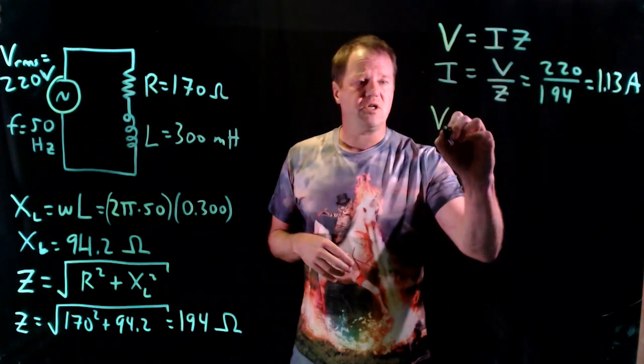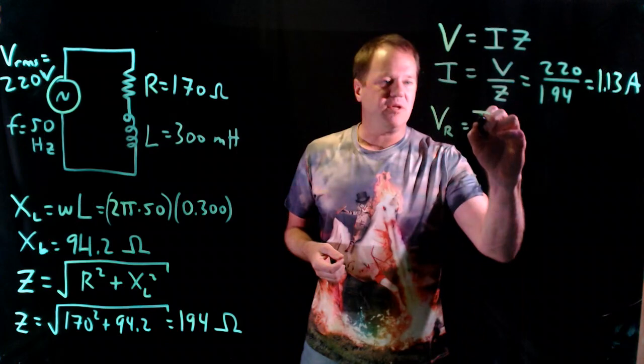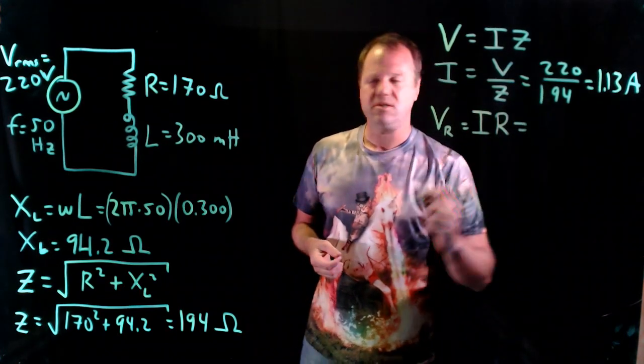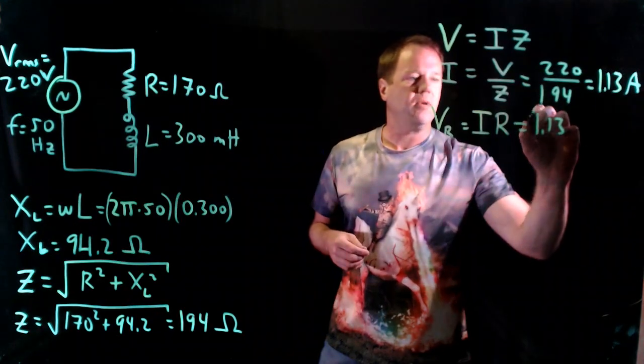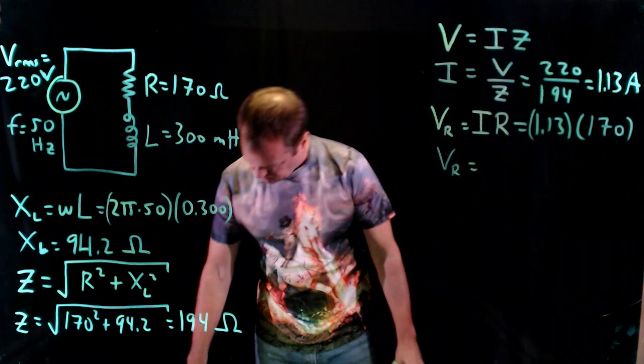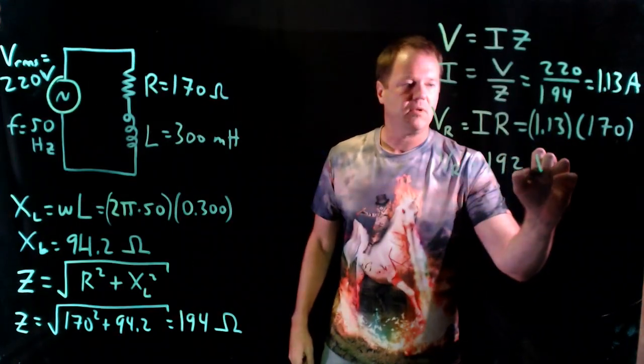So voltage across the resistor, this is truly Ohm's Law, not a formula that looks like Ohm's Law, but current through the resistor times the resistance of the resistor. So I take that 1.13, multiply by the resistance of 170 ohms, throw that into my calculator, and it spits out an answer of 192 volts.